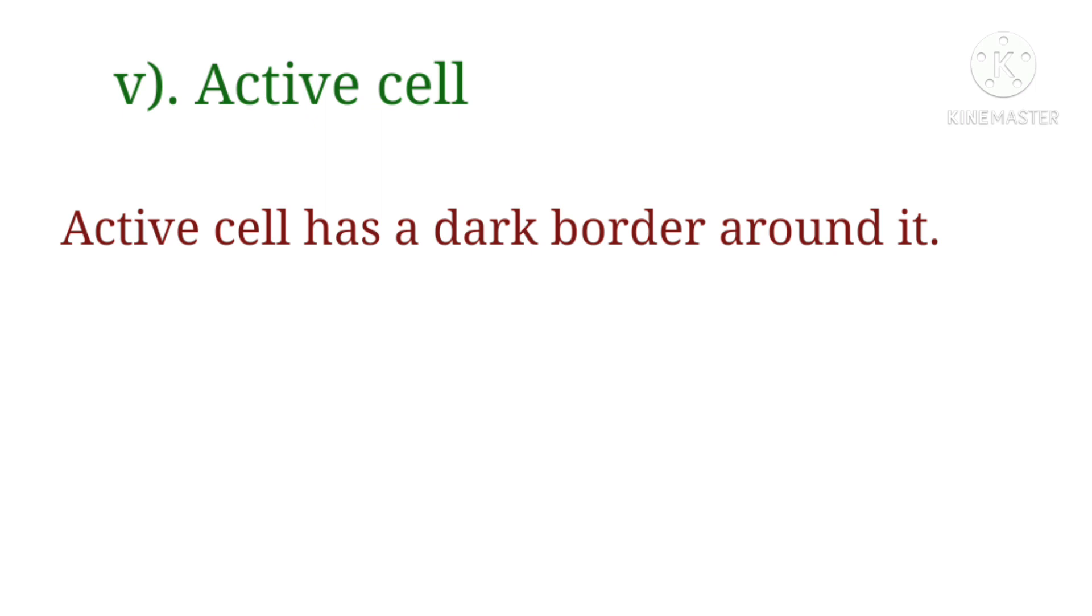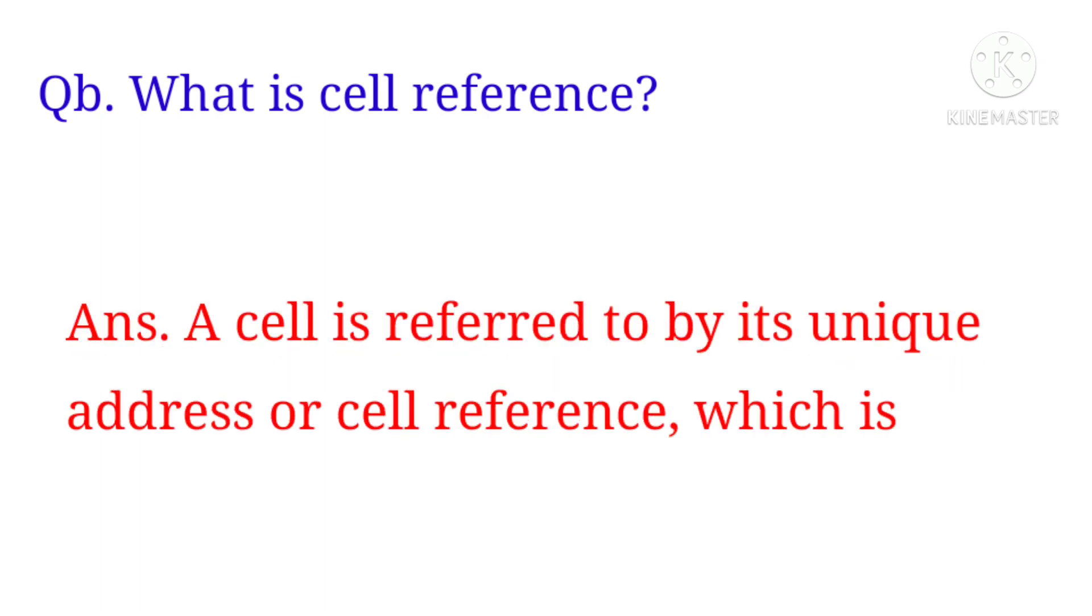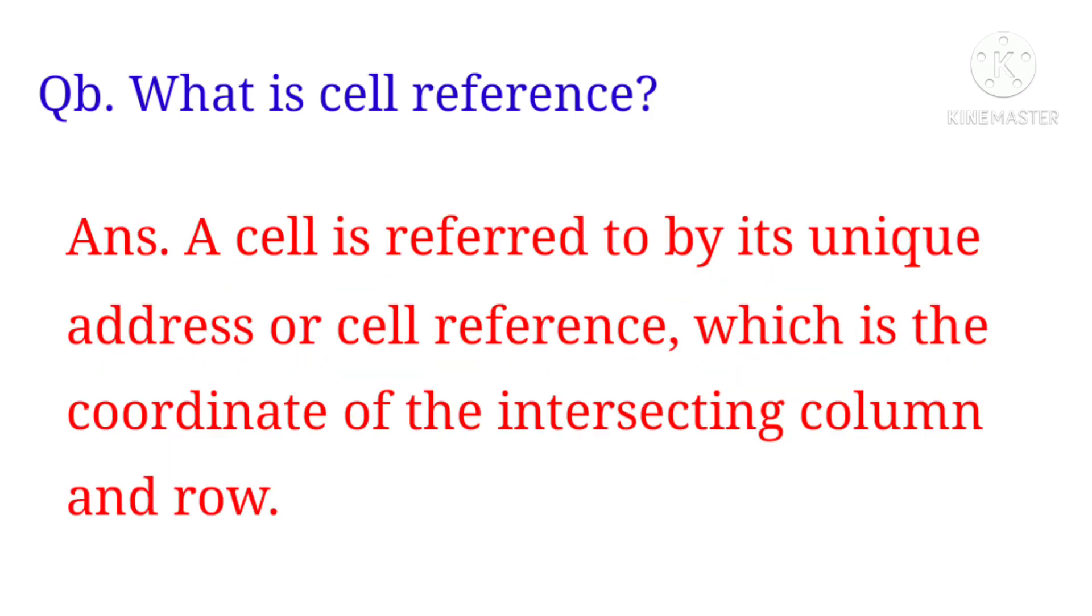Question B: What is cell reference? Answer: A cell is referred to by its unique address or cell reference, which is the coordinate of the intersecting column and row.